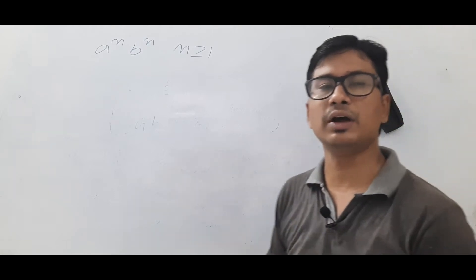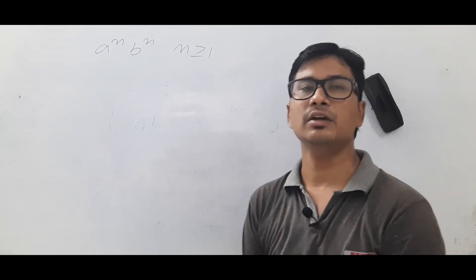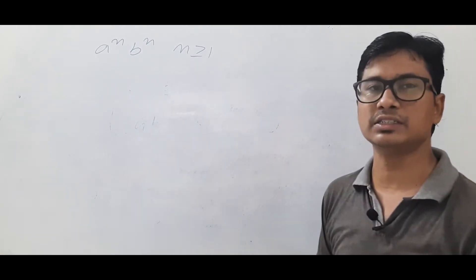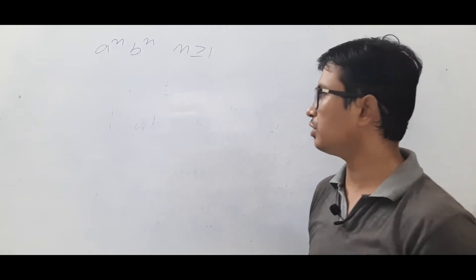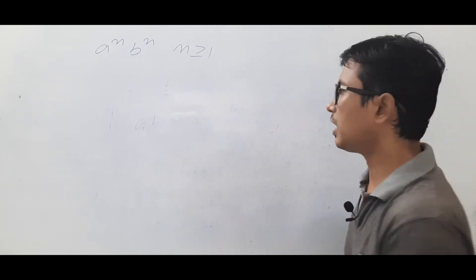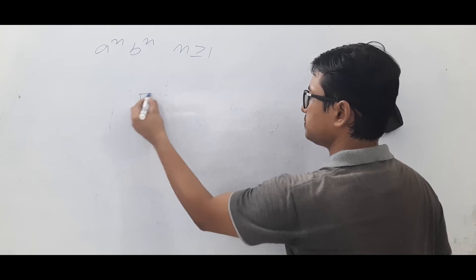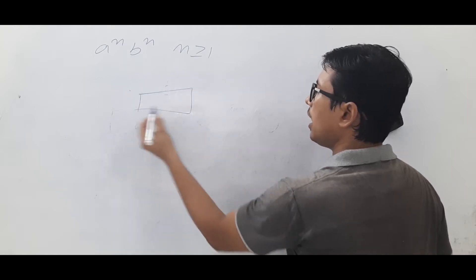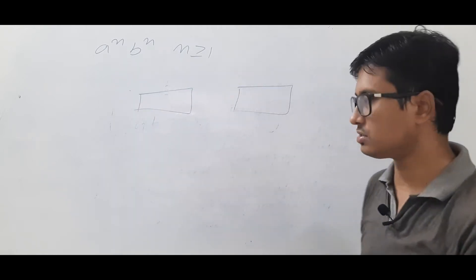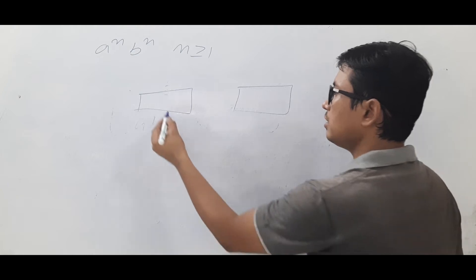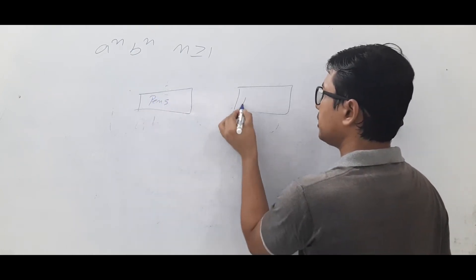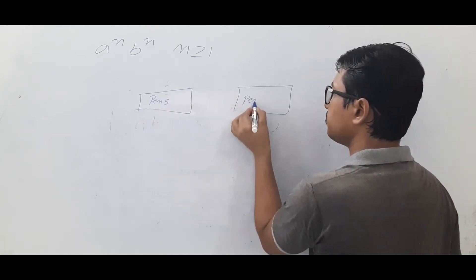We have already constructed a pushdown automata for this language. Now we will see how to construct the Turing machine. Before doing so, let me take a small analogy. Suppose I have two boxes — one box contains pens and another box contains pencils.